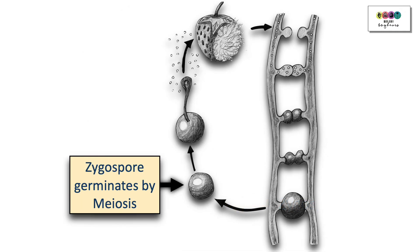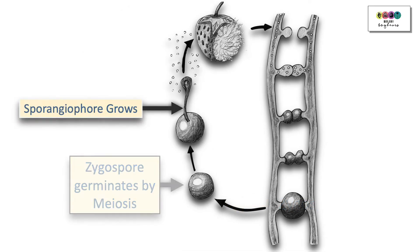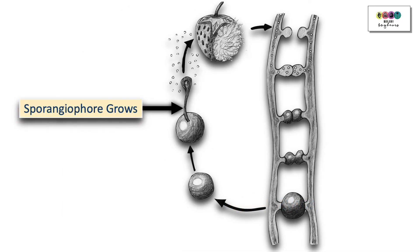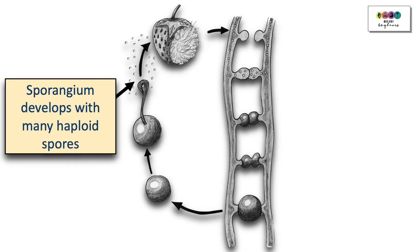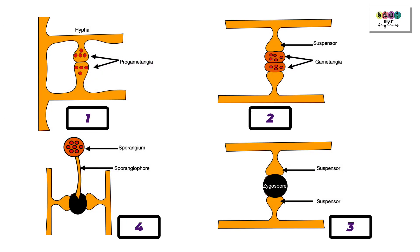The zygospore germinates by meiosis. A sporangiophore emerges from the zygospore, and at its top a sporangium develops filled with many haploid spores. The sporangium eventually splits, releasing those spores. When revising sexual reproduction, draw four summary diagrams and don't forget to add the plus strain and minus strain or you could lose marks.